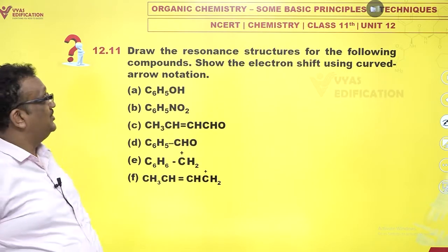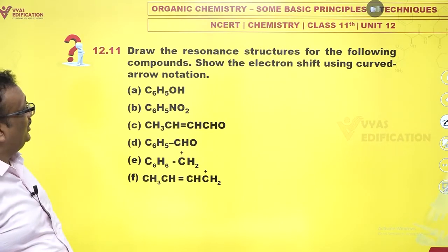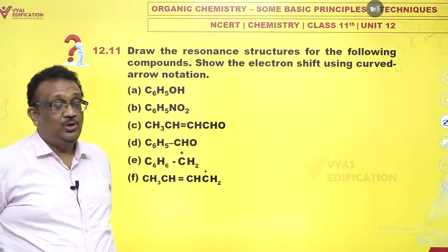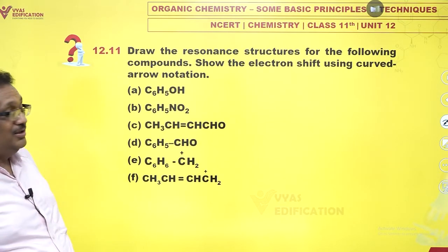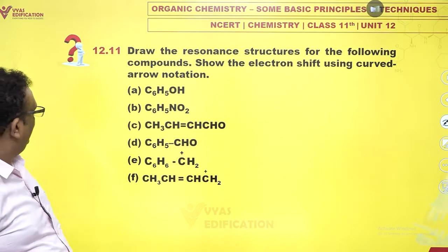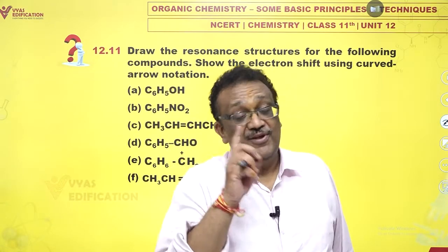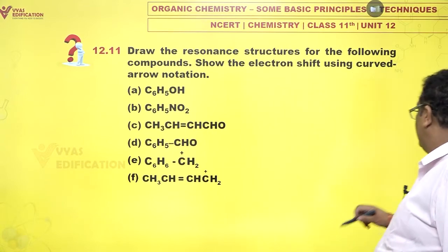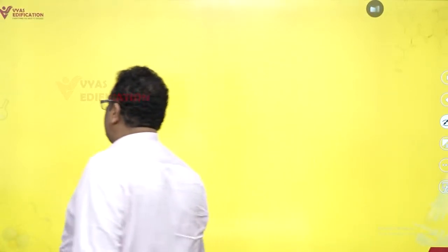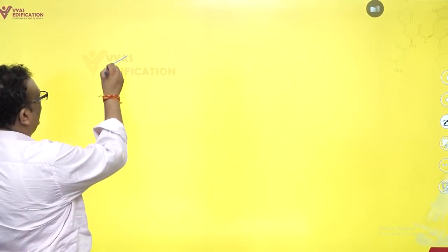This is a long question. It says draw the resonance structures for the following compounds, show the electron shift using curved arrow notation. Please note this is a very fundamental exercise in organic chemistry. You will always need it.